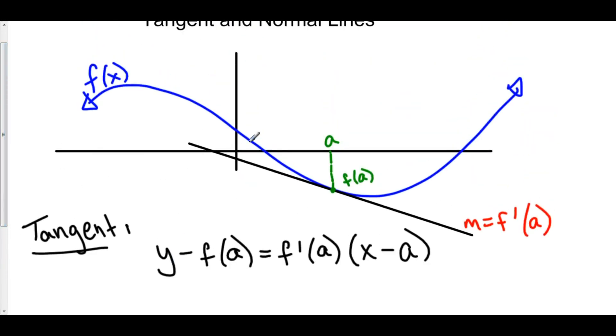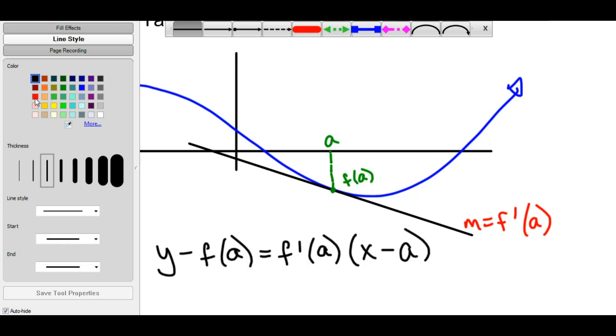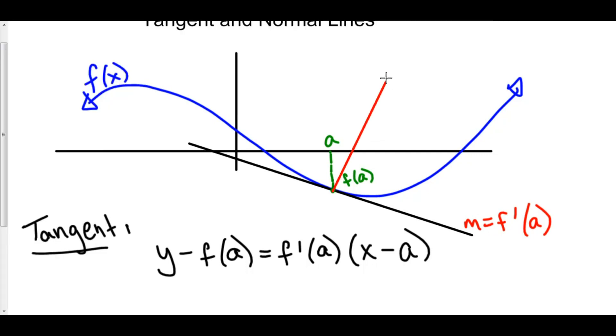Now, let's talk about normal lines. A normal line is very special in that it is perpendicular to the tangent line. Not only is it perpendicular to the tangent line, but also it passes through our point a comma f of a. So, here's our tangent line that lies tangent to the graph of f. The normal line at x equals a is perpendicular to the tangent line. It's the same point a comma f of a. The only difference here is the slope.